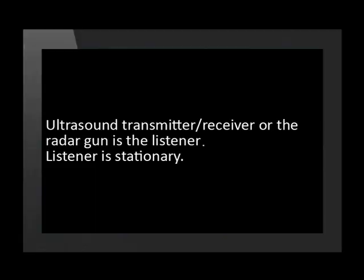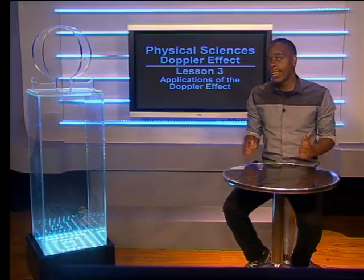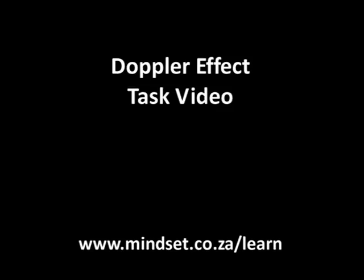In summary, the Doppler effect — be it in medicine, sports, or even traffic law enforcement — is used to measure the velocity of an object. In all these situations, the ultrasound and the radar gun serve as the listener that receives the reflected sound, and the listener is stationary. Thank you for joining us, and it is time for you to do the task found on www.mindset.co.za. Goodbye.